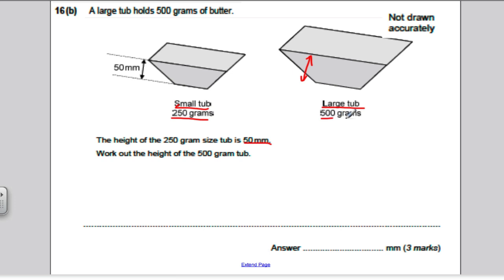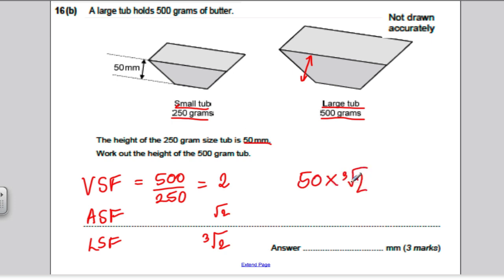We can work out the volume or mass scale factor. The volume scale factor, we can divide the masses. That's equivalent to dividing the volumes for all intents and purposes. So that's 500 divided by 250, which is 2. So the scale factor of volume is 2. So how do I work out the scale factor of length? Well, the area scale factor would be the square root of 2, and the length scale factor is the cube root of 2. So if I know the height is 50 millimeters, I take the 50 and I multiply it by the cube root of 2. And I get 62.996, which goes to 63 millimeters to the nearest millimeter.